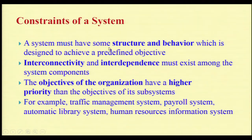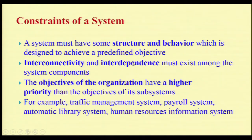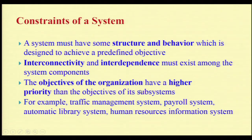What are the constraints of a system? A system must have some structure and behavior which is designed to achieve a predefined objective. Interconnectivity and interdependence must exist among the system components. The objectives of the organization have a higher priority than the objective of a subsystem. For example, the traffic management system, payroll system, automatic library system, and human resource information system are some examples of systems.